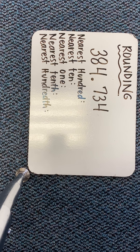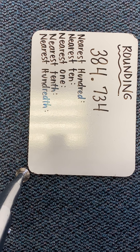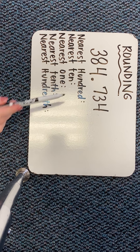Hi boys and girls. Today we're going to review some rounding. If I have the number 384 and 734 thousandths, we're going to round to the nearest hundred first.